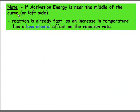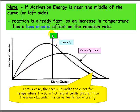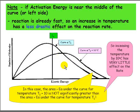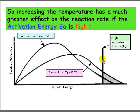If the activation energy is near the middle or left side of the curve — in other words if it's low — the reaction is already fast, so an increase in temperature has much less drastic effect on the reaction rate. In this case, the total area under the T1+10 curve is not significantly different than the area under the T1 curve. So increasing the temperature has a much greater effect on reaction rate if the activation energy is high or near the tail of the curve.